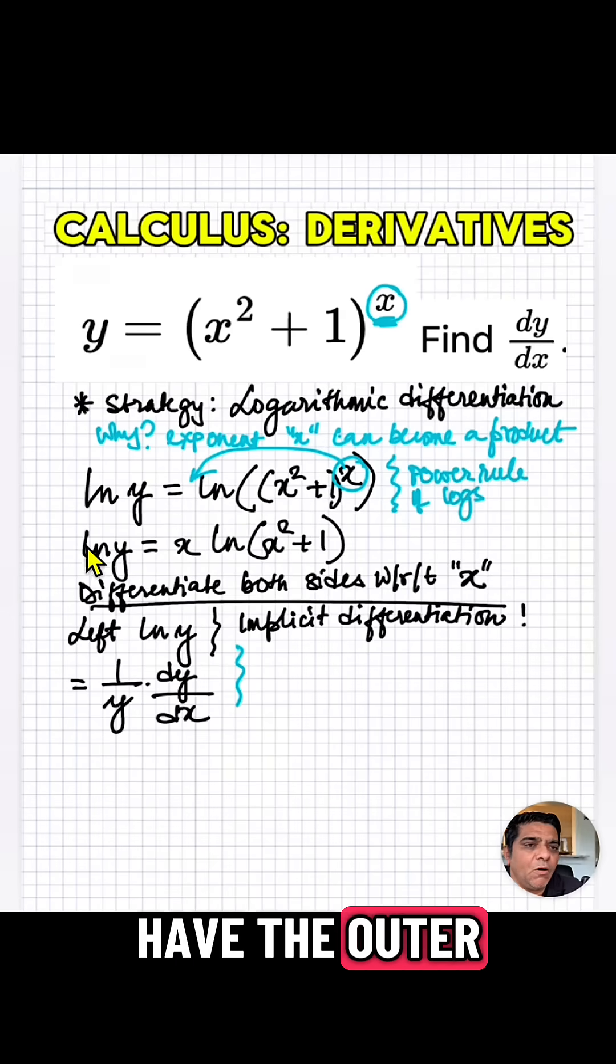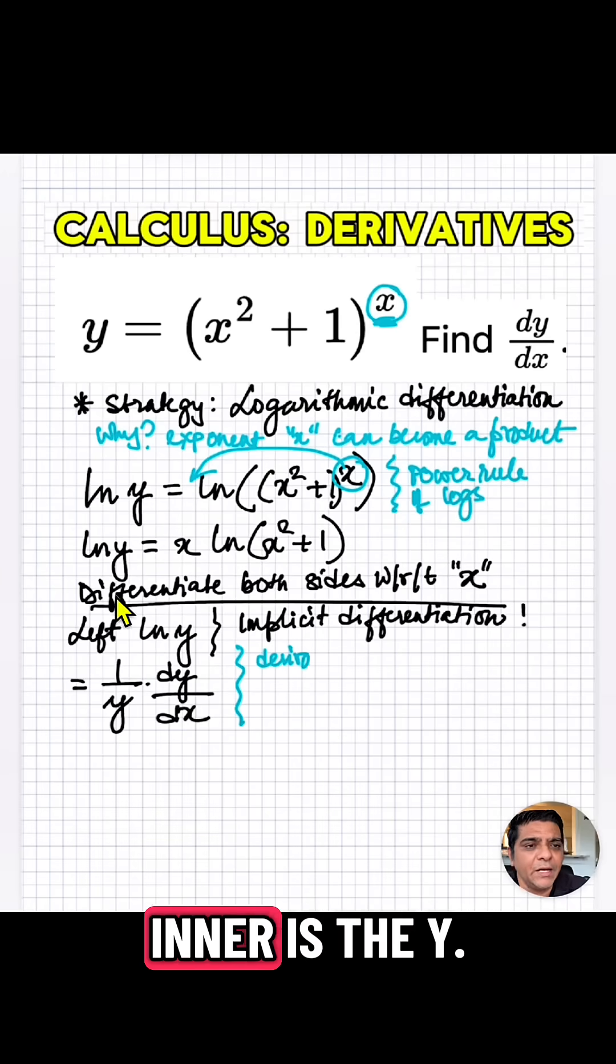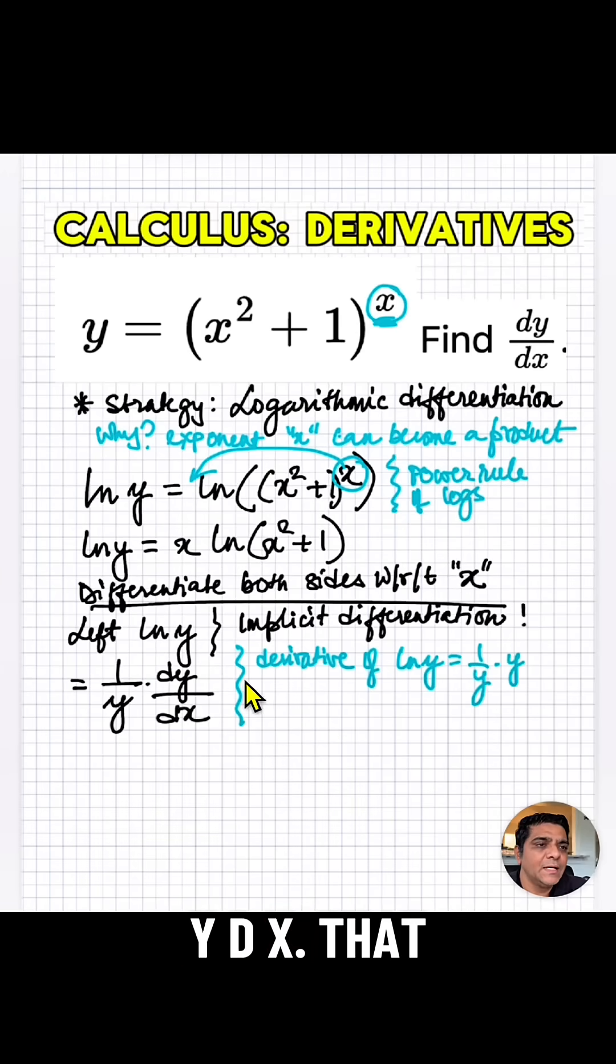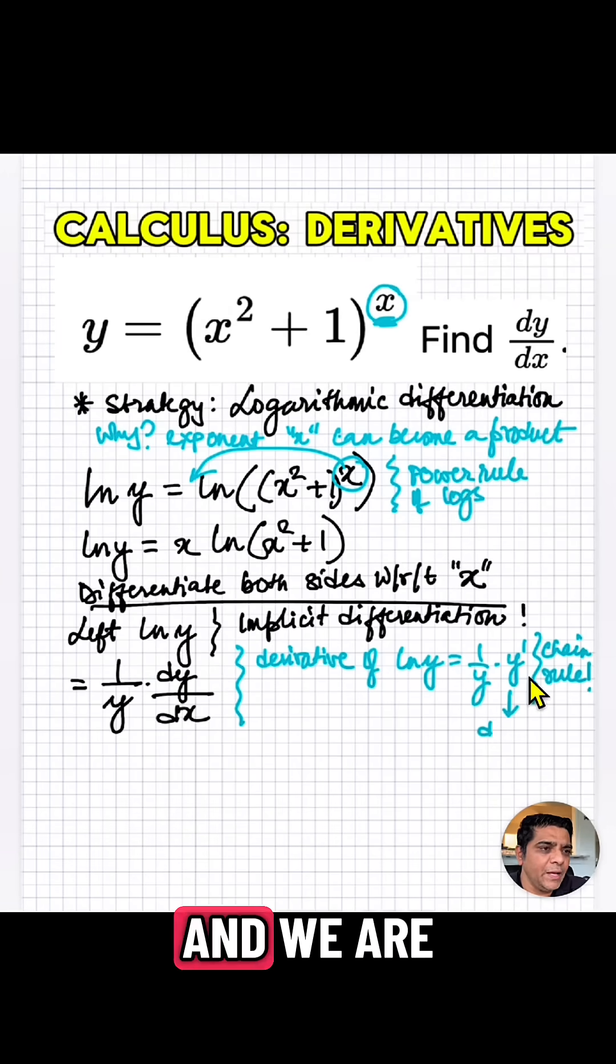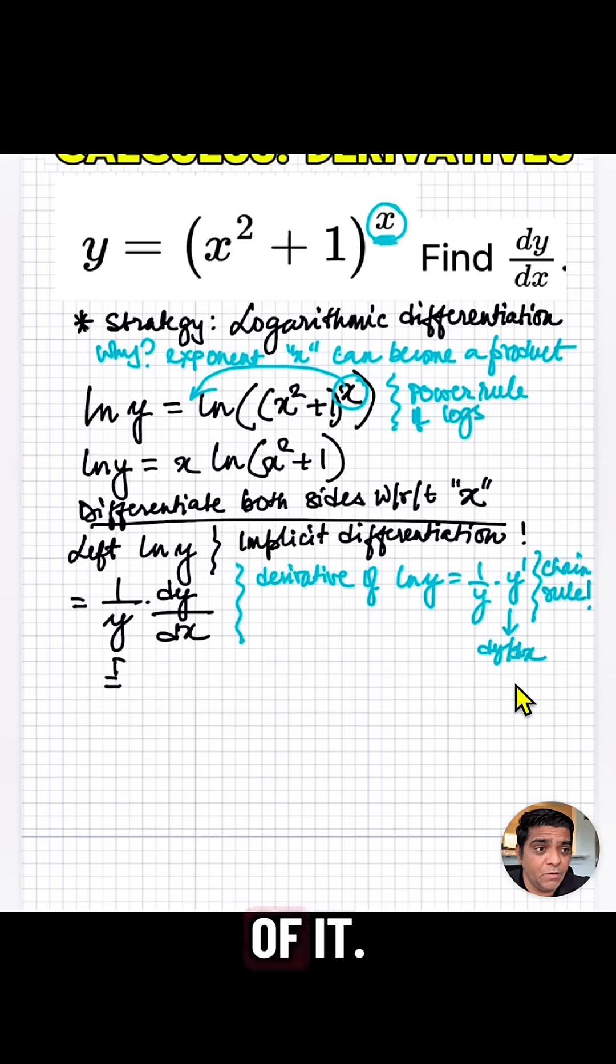Because we have the outer function, ln of y, that gives 1 over y. And the inner is the y. So that's dy dx. Because derivative of ln of y is 1 over y. And we are going to use a chain rule for the rest of it. So dy dx.